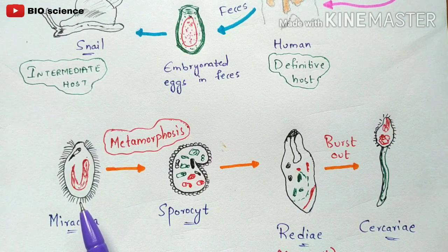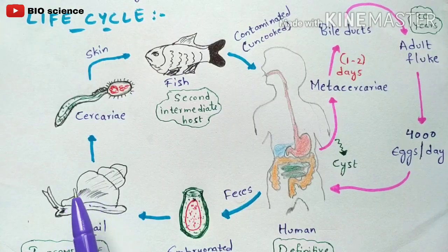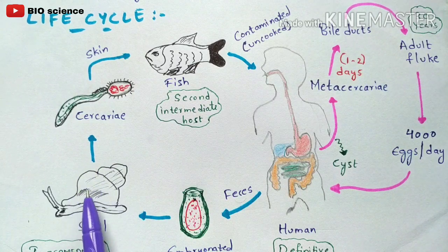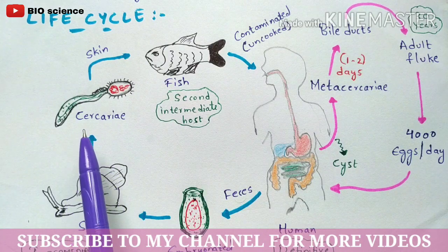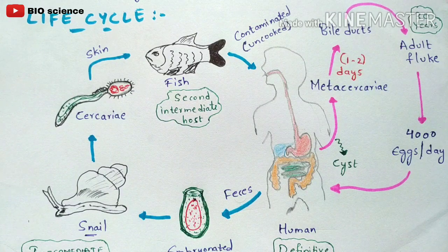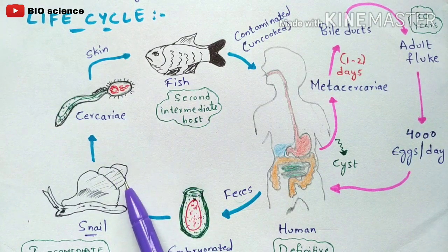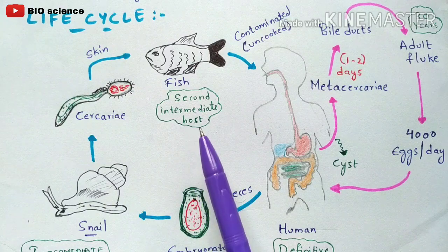From the embryonated egg, the miracidia are released through hatching and finally develop into cercaria inside the snail, the primary intermediate host. The cercaria are then excreted from the snail along with its fecal material, becoming free in the water. These free-swimming cercariae in the water are then consumed by fish. We consider the fish as the secondary intermediate host, while the snail is the primary or first intermediate host.